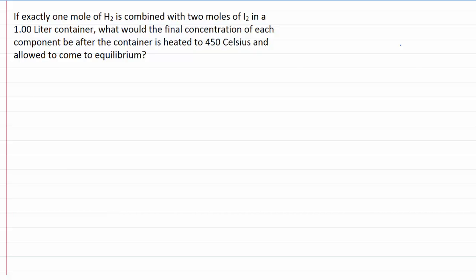So let's set up a problem here. One mole of H2 combined with two moles of I2, now obviously these are going to react to form HI, and then the HI is going to decompose back to H2 and I2. The question is, what are the final concentrations? The temperature is going to be at 450, and we've got a one liter container, one mole of H2, two moles of I2.